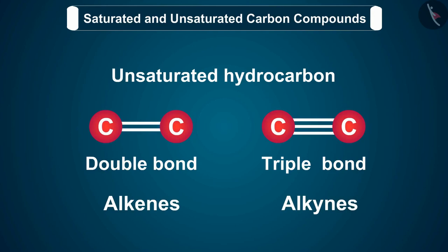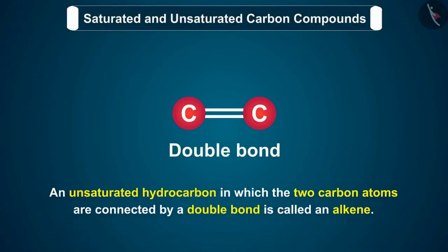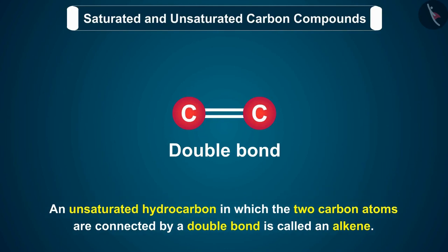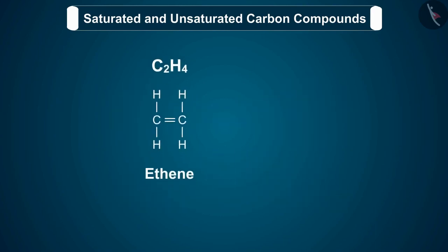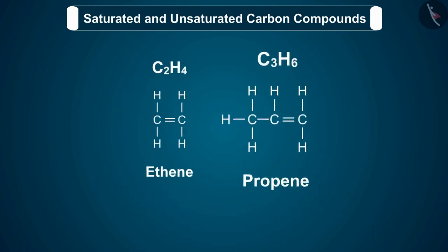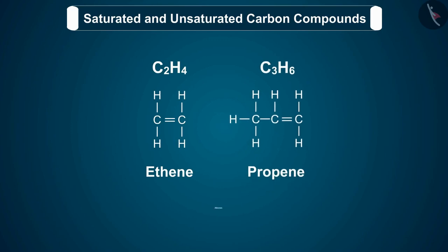We will now discuss each in detail. An unsaturated hydrocarbon in which the two carbon atoms are connected by a double bond is called an alkene. These alkenes contain a double bond between two carbon atoms, which is formed by the sharing of two pairs of electrons. Ethene C2H4 and propene C3H6 are two alkenes because they contain a double bond between the two carbon atoms.